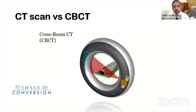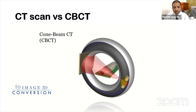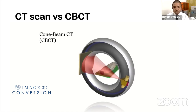In cone beam computed tomography, instead of a fan-shaped beam we have a cone-shaped beam, and instead of multiple detectors we have a single flat panel detector. With a single rotation, the CBCT equipment can capture complete three-dimensional data. Because of this, the time taken is very less compared to CT scan, and the radiation is also comparatively very less.